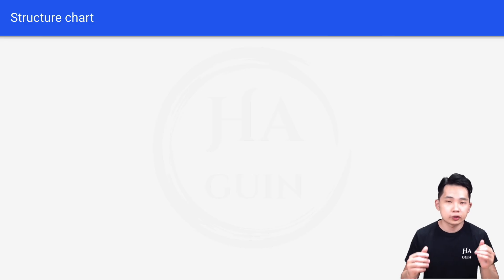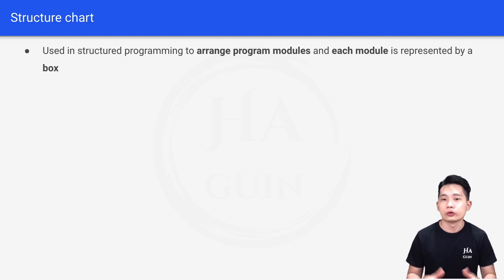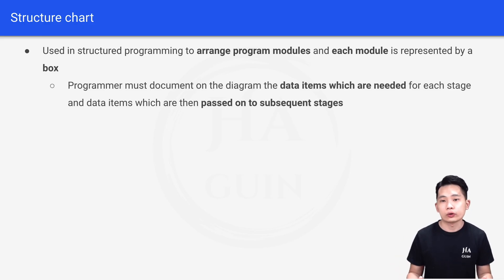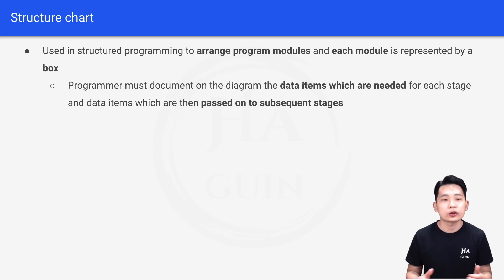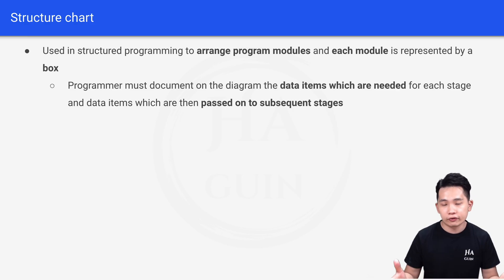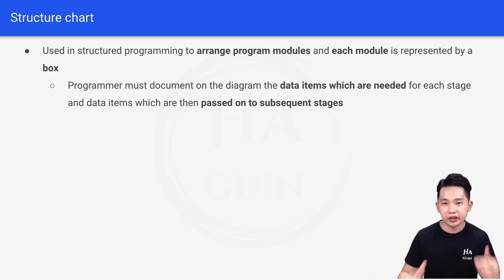First of all, let's look at the purpose of a Structured Chart. It's actually used in Structured Programming to arrange program modules, and each module is represented by a box. The programmer must document on the diagram the data items which are needed for each stage, and data items which are then passed on to subsequent stages. You might not understand the definition at first, but let's look at a practical example to understand better.